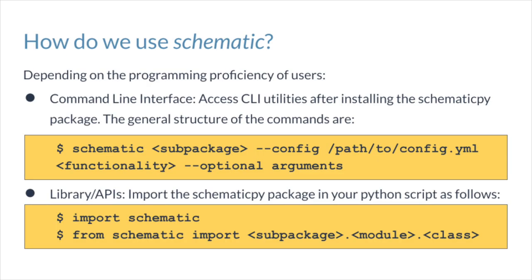Depending on the level of proficiency of users, Schematic provides a couple of ways in which users can leverage its functionalities. Biologists with some exposure to using the command line can use Schematic's command line interface or CLI to interact with the tool, while other, more seasoned programmers can use it as a Python library. For the purposes of this talk, we'll take a quick look at a few screenshots of what the results look like when we execute some of these CLI utilities.